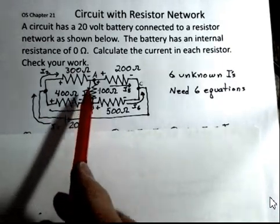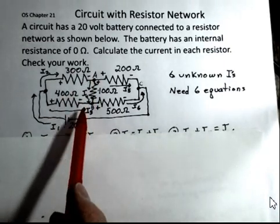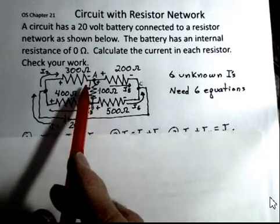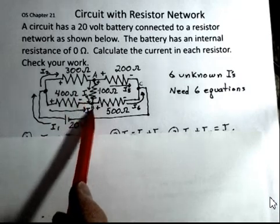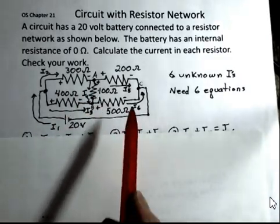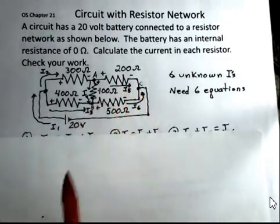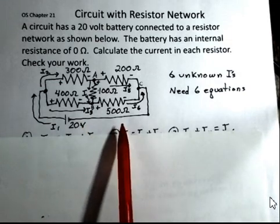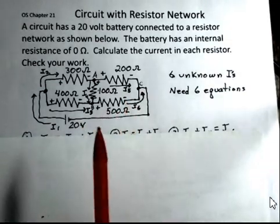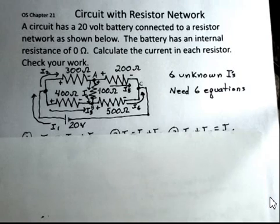There's a middle branch from point A down to point B. There's a current I4 that I'm choosing to draw the arrow downward through this 100 ohm resistor. Then there's a current I5 that I've drawn going off to the right through the 200 ohm resistor and a current I6 going through the 500 ohm resistor. As we look at this, there are six unknown currents, so we'll need to generate six equations and then solve those to find the individual currents.